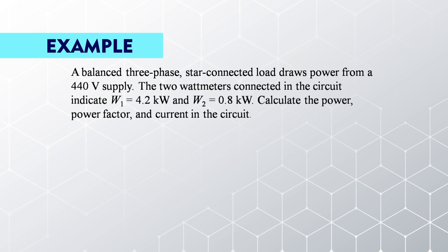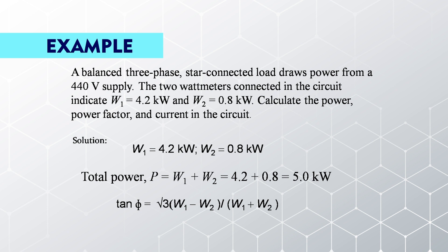Now, we are going to discuss a problem on the basis of power measurement. A balanced 3-phase star-connected load draws power from a 440-volt supply. The 2 wattmeters connected in the circuit indicate readings: W1 equals 4.2 kilowatt and W2 equals 0.8 kilowatt. Calculate the power, power factor, and current in the circuit. The total power is P equals W1 plus W2 equals 4.2 plus 0.8 equals 5 kilowatt.